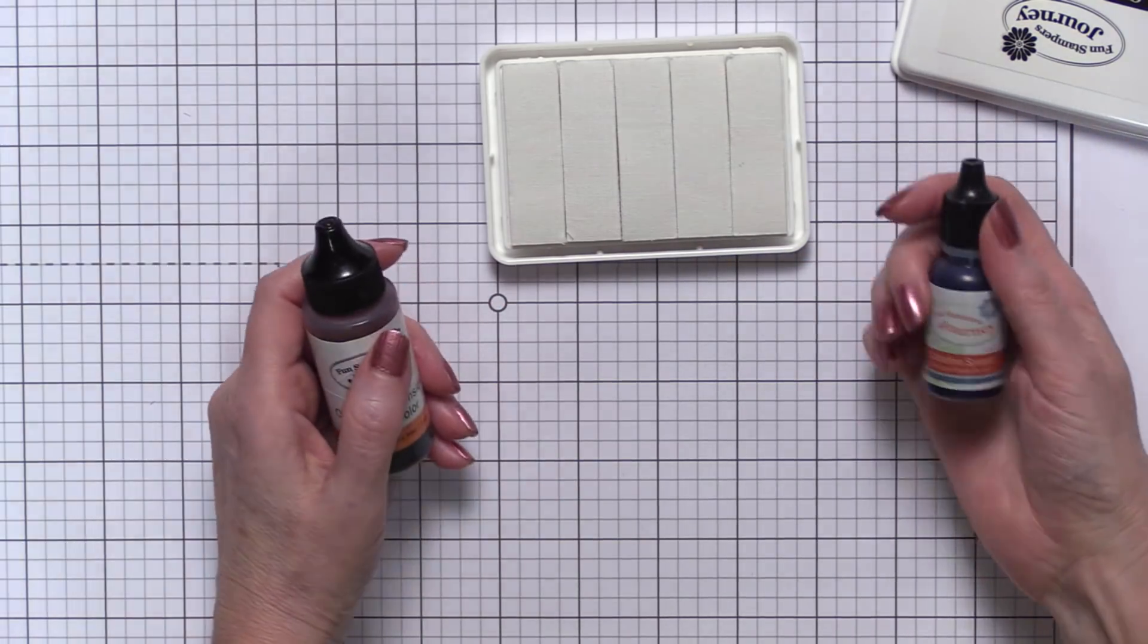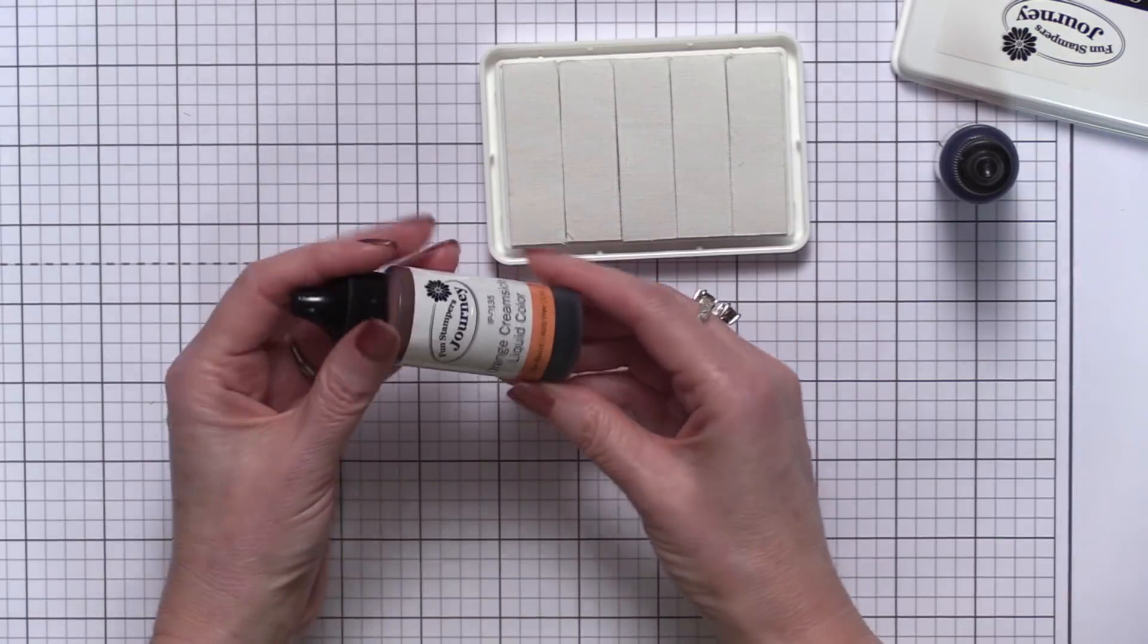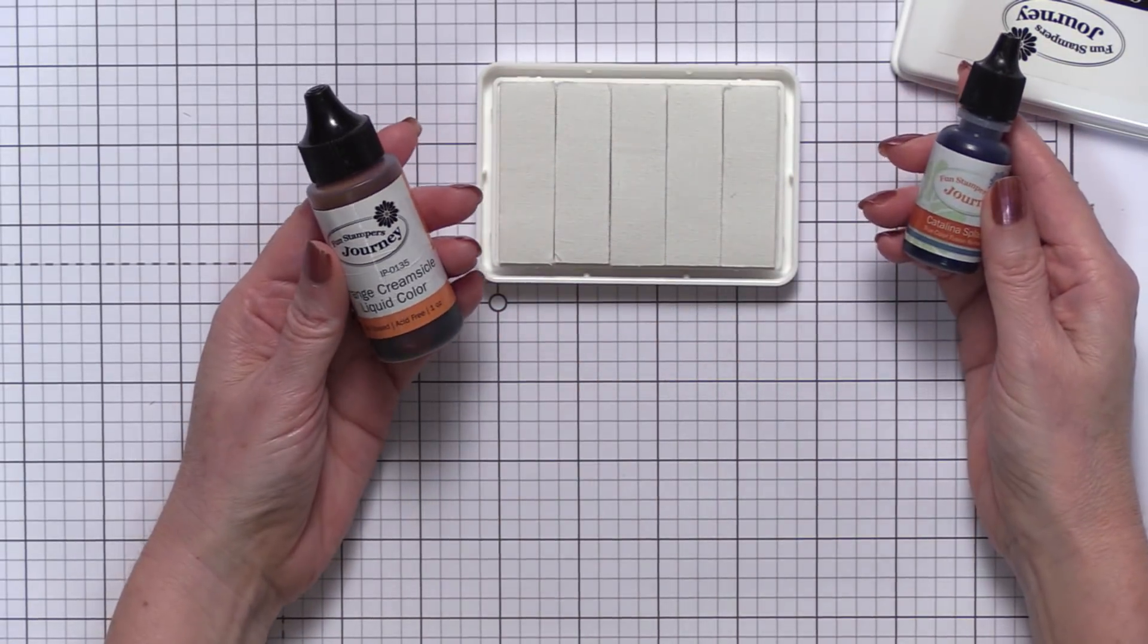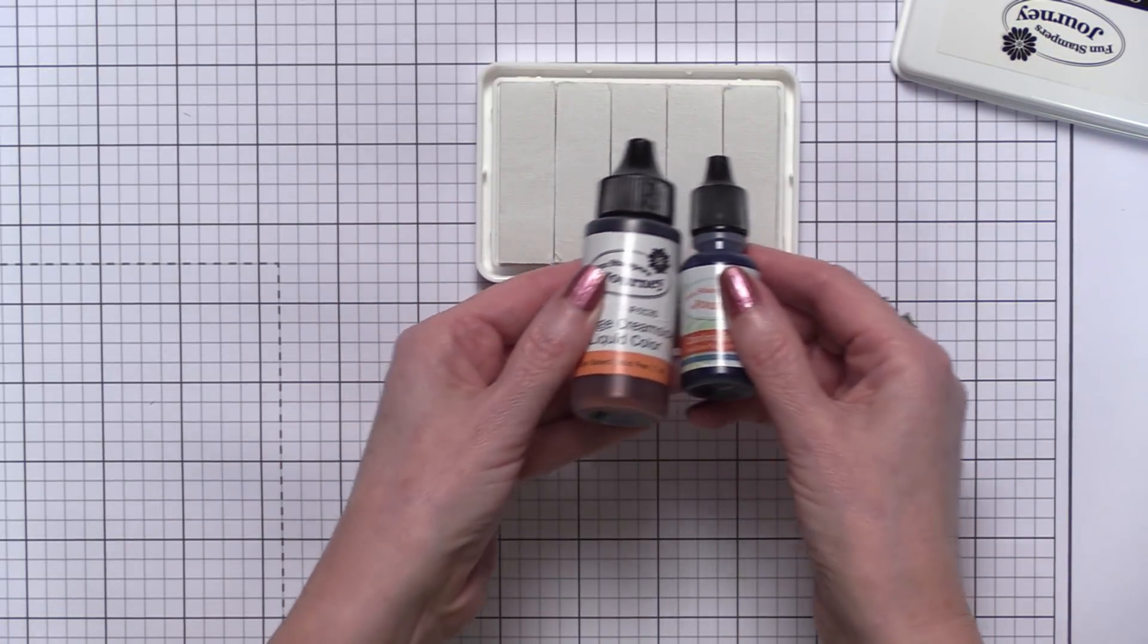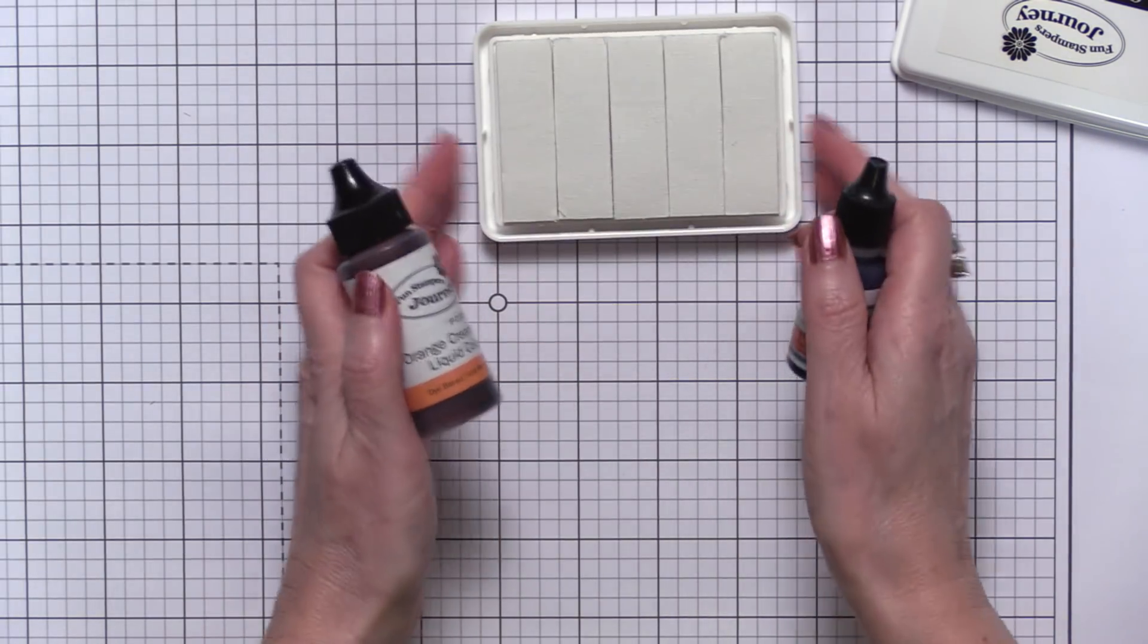Now there's a couple of ways you can ink these up. You can ink them with our reinkers and you can use our liquid colors. The only thing I would mention about these two is you're not going to want to use them both on the same ink pad because they have very different formulas and they're not going to mix well together.